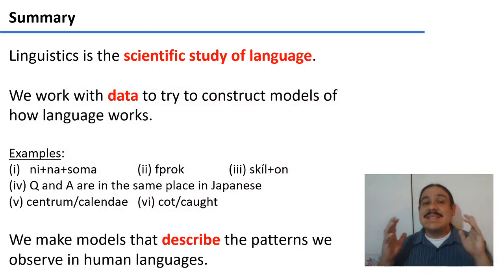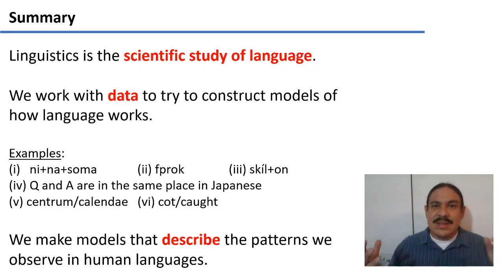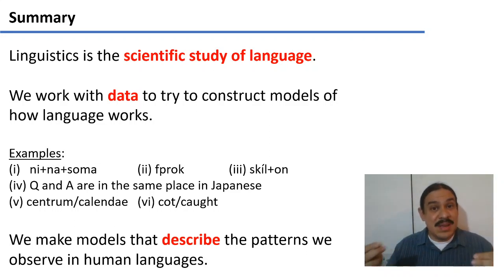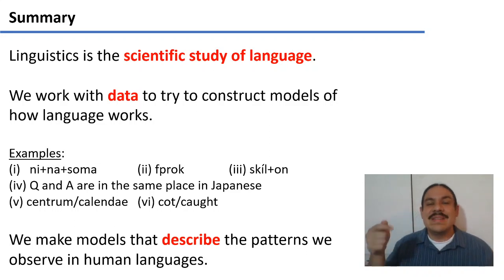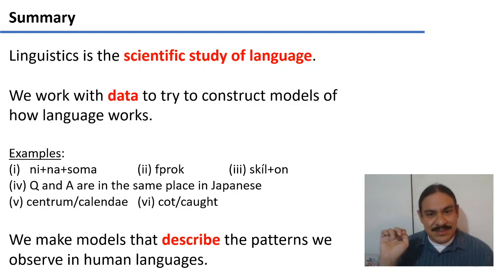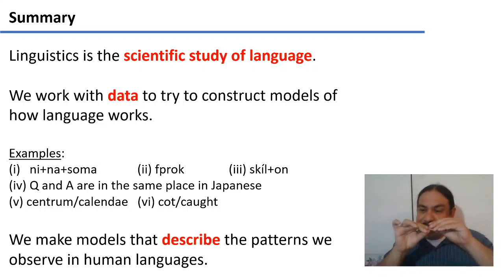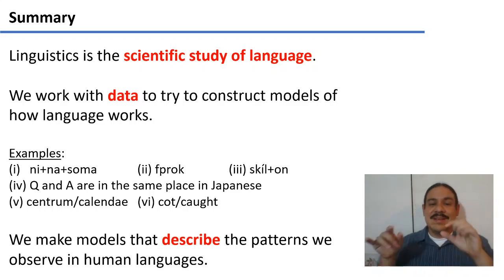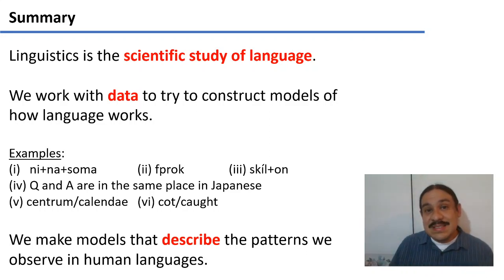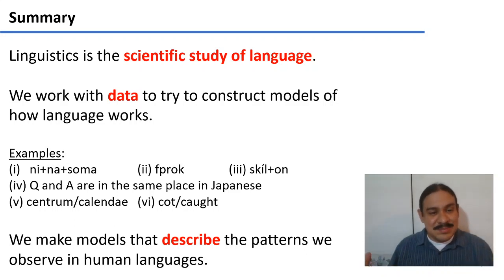Just a quick roundup. These examples have shown how we study language: we use data to look at patterns, and then construct models of how language works. We compared words in Swahili to figure out what 'ninasoma' meant. We tested whether 'sproc' resembled other English words — it doesn't. We looked at sentences in modern Greek to figure out what parts of 'skilos' mean. We looked at questions and answers in Japanese and found that question words and answer words occupy the same position, whereas in English they don't. We found that in the Latin-to-English transition, the K sound is affected by neighboring sounds — K before I or E changed to S. And we used intuition about our own accent to explore a dialectal map of the U.S. In summary, we use data to make models and describe the patterns we see in human languages.